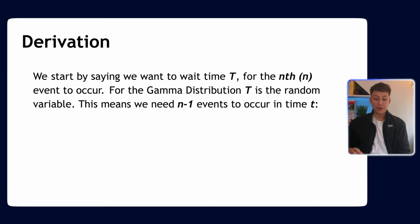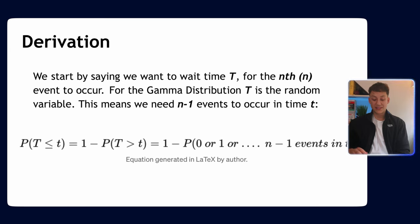So we can derive the gamma distribution by saying we want to wait a certain time T for the nth event to occur. For the gamma distribution, T is the random variable. This means we need n minus 1 events to occur in some time t. So mathematically, what we have is this.